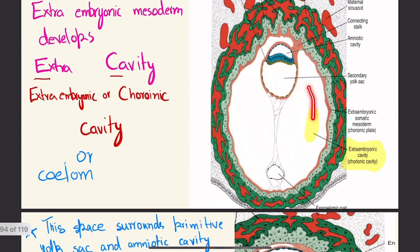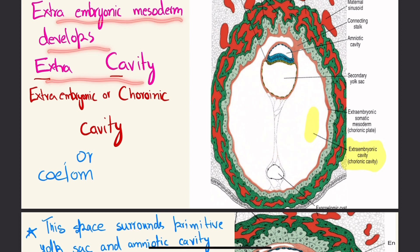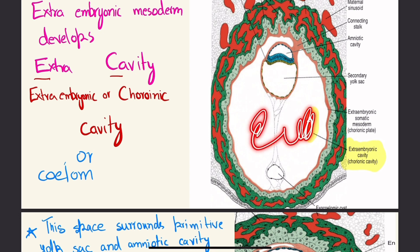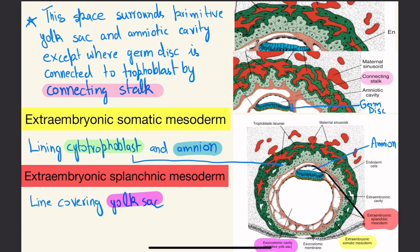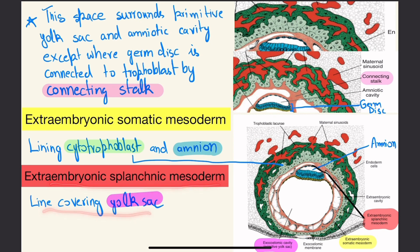The extra embryonic mesoderm develops into the extra embryonic or chorionic cavity, also called the extra embryonic or chorionic coelom. This space surrounds the primitive yolk sac and amniotic cavity, except where the germ disc is connected to the trophoblast by the connecting stalk. The extra embryonic mesoderm has two layers: extra embryonic somatic mesoderm — lining the cytotrophoblast and amnion — and extra embryonic splanchnic mesoderm — covering the yolk sac.